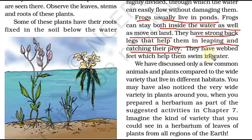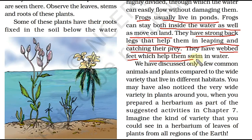Frogs also have webbed feet — similar to ducks — where the toes are connected in an interlocked type structure. This helps them to swim in water. This is how frogs survive and live both in ponds and on land.